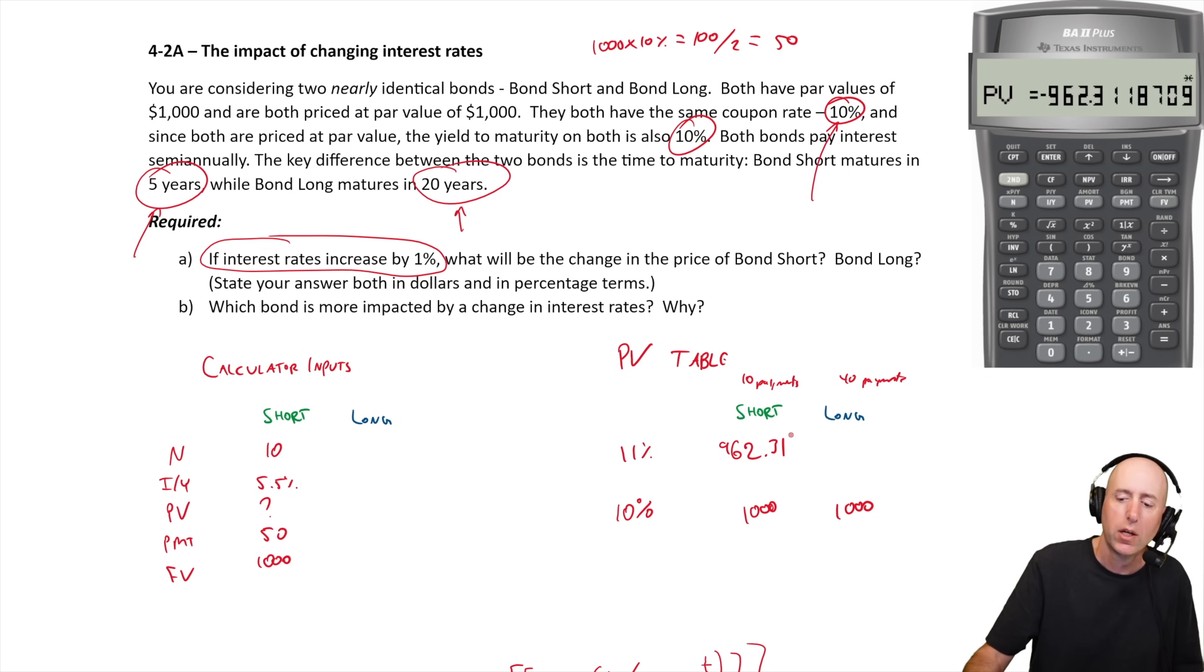Now for the bond that has 40 interest payments left, having a weaker interest rate is going to hurt the value of this bond more. In other words, a longer term bond has higher interest rate risk. Let's see what the numbers look like for our long bond. Everything's the same except for the number of payments, 40.